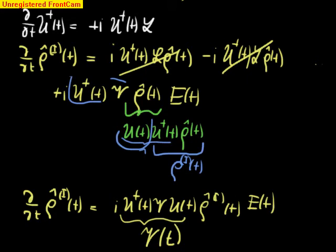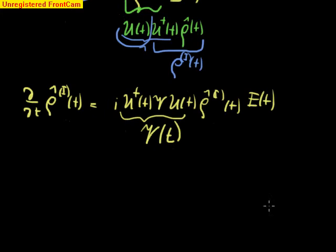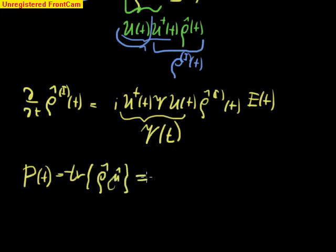Now we are ready to do two things. We will first formally solve this equation and then return back to the Schrodinger picture, and then we write down the polarization, how it looks like. We remind ourselves that this is our goal.